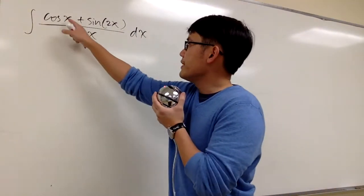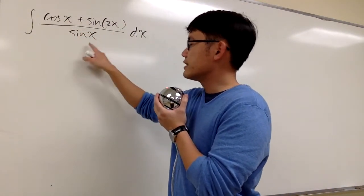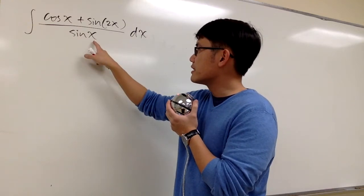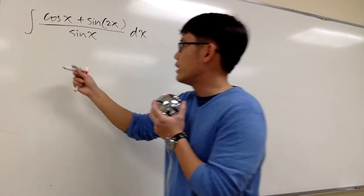Let's see how we can integrate cosine x plus sine of 2x all over sine x. Luckily, we only have one thing on the bottom, namely sine x, so we can split the fractions. Let's see what we can do after that.